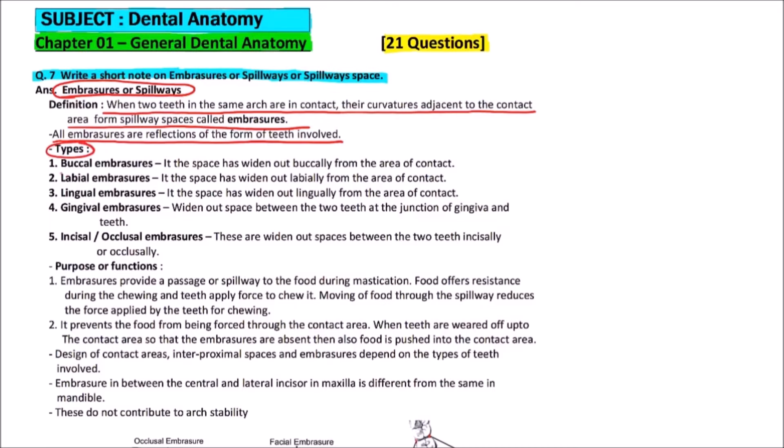Now, the types. First is buccal embraces. It is the space that has widened out buccally from the area of contact. Then, labial embraces. It is the space that has widened out labially from the area of contact.